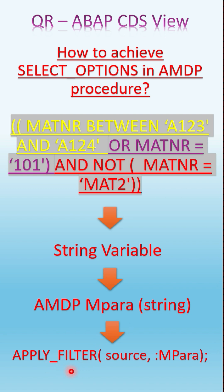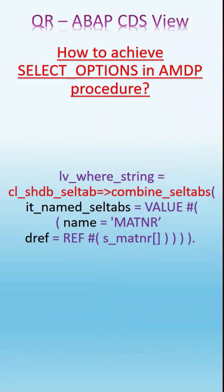Once inside the AMDP procedure, you have a function called APPLY_FILTER, which takes the source and the method parameter variable that currently holds the select option statements. The source can be a database table — you can apply it directly to MARA — or if you already have an internal table (for example, IT_MARA), you can use that as the source as well. Based on the select option, the filter will be automatically applied to the specified source.